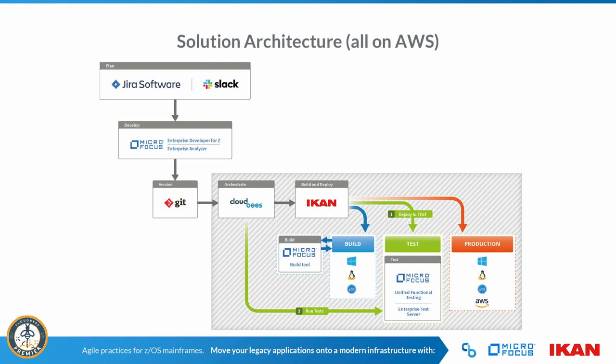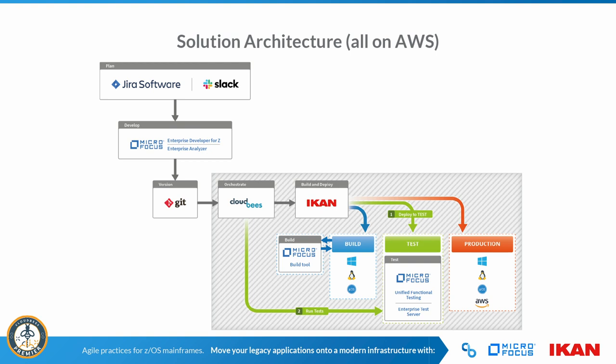The fourth part is again initiating the cloud piece that initiates ICANN ALM to do the build, provision the Enterprise Test Server, and run the tests. If this goes well, the next phase will start the compile on the mainframe. Because this takes about 10 minutes, I'll just give you a simple example on how a JCL step is generated using a resource file and a model file. You see here the resource file where we have predefined, when you're using a pre-compile for CICS, the model you are using, the program, the parameters, the copylib, link-module, return code you want, and the link-lib. So you can really tailor this to your own company standards. And then you have the model file which contains the JCL cards, and again you can change these models to your own standards. Using the phases or the pipelines in CloudBees, you will generate JCL, or for Windows or Linux it will generate the BAT files or the shell scripts.